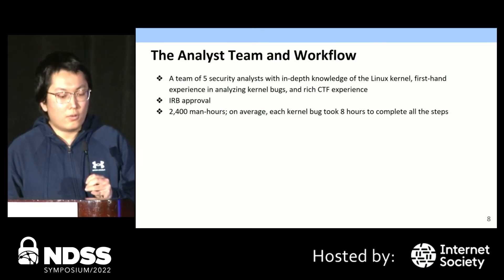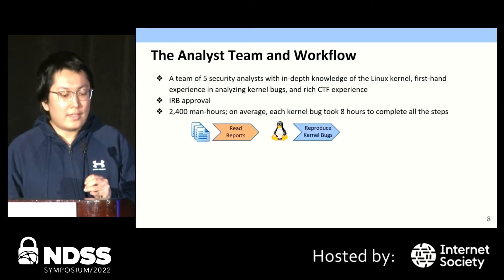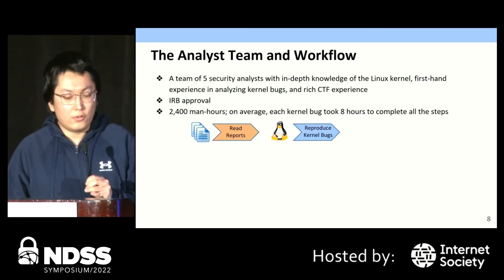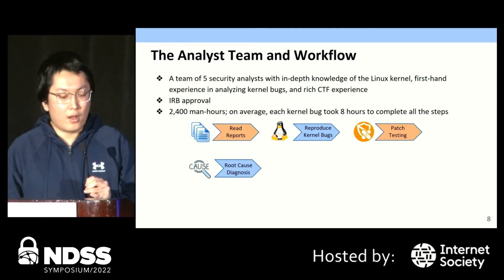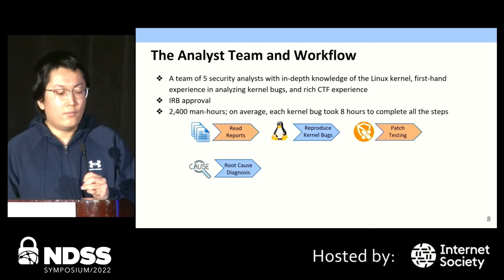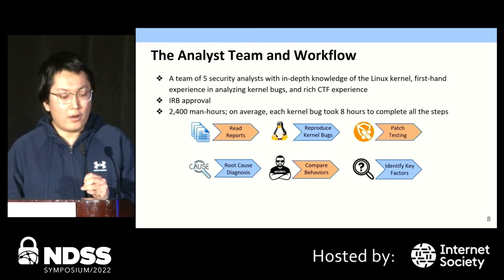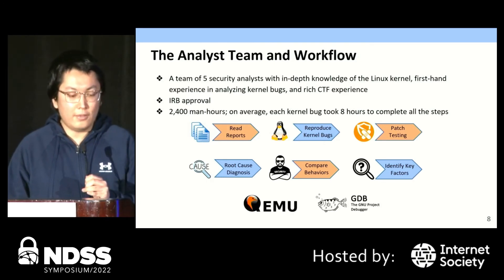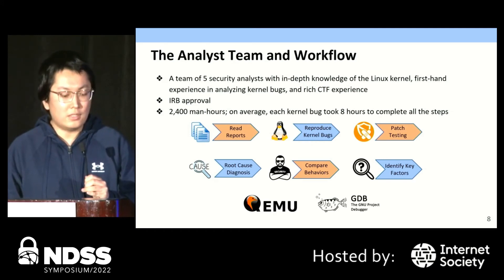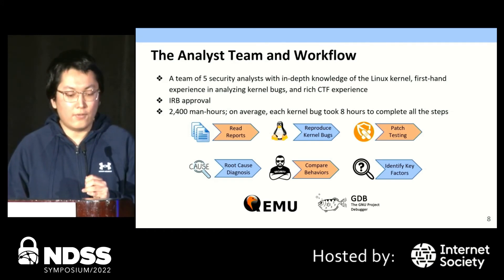The whole procedure includes six steps. We start from reading reports and reproducing bugs. Then we test the effectiveness of the patch and diagnose the root cause. If the patch doesn't work, we exclude them from further investigation. Through diagnosing the root cause, we can learn whether two bugs refer to the same bug. Finally, we compare the behavior of bug reports and conclude the causing factors of duplication. We heavily use tools like QEMU and GDB for analysis — QEMU for bug reproduction and GDB for root cause diagnosis.